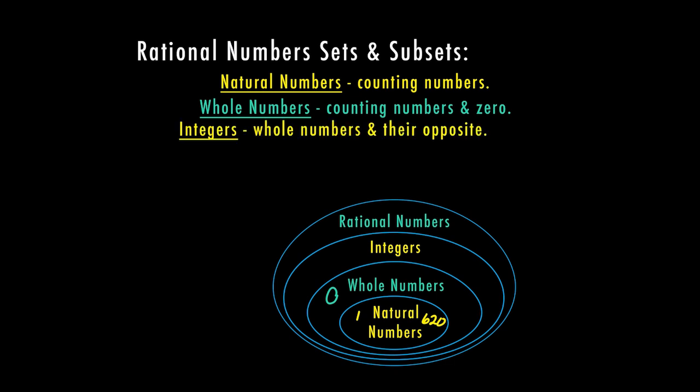Then we have our integers. Integers are whole numbers and their opposites. So again, natural numbers, whole numbers, those are also considered integers. So you can see here as we start in the middle of the Venn diagram and start to work our way out, everything in the center circle in our natural numbers is actually considered everything going outside of the circle. So it's included in all of these other categories.